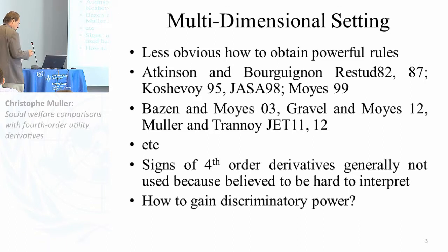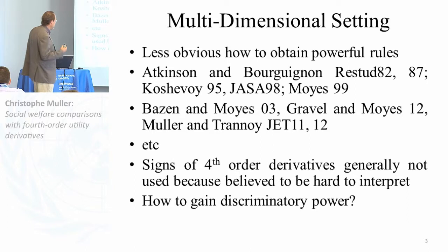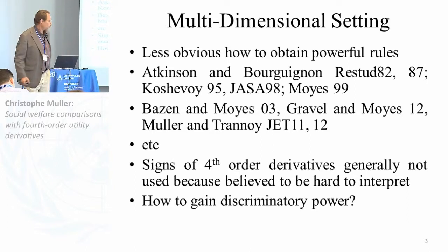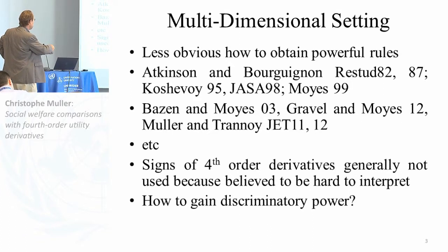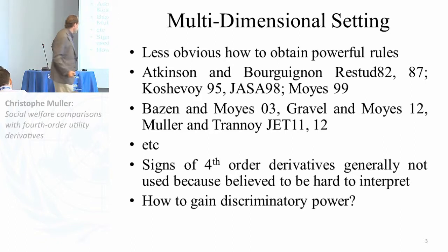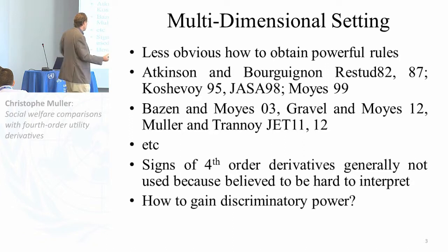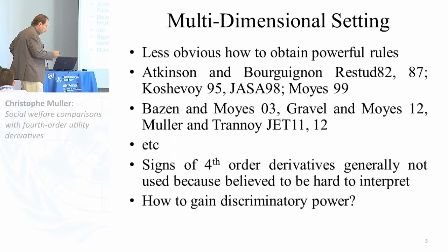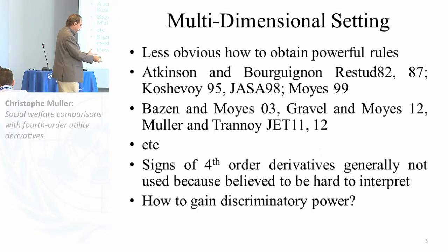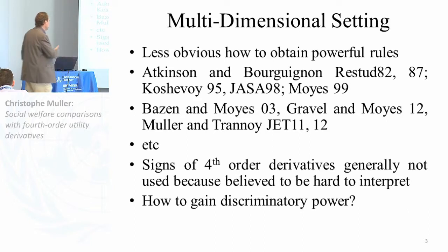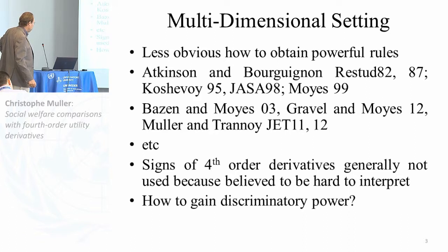In multidimensional settings, which is the topic of this paper, the literature is much more recent but growing. It's less obvious how to obtain powerful comparison rules. By multidimensional setting, I mean you want to do social welfare comparisons between countries, between periods, before and after a policy, and you have several dimensions — for example, health, income, education — which contribute to social welfare. It's less obvious to obtain powerful rules. With actual data, you generally cannot conclude that one situation is more unequal or that social welfare in one situation is better than in another.